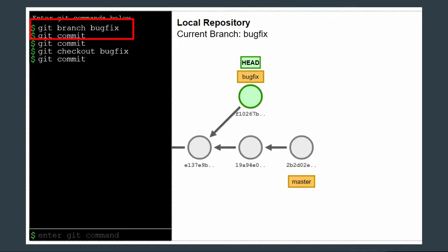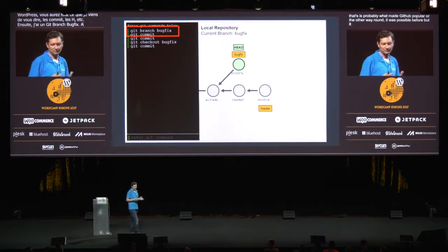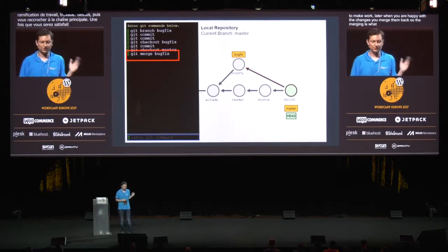Another powerful concept is branching and merging. This is probably what made Git popular — or the other way around, Git popularized this workflow. It was possible before, but it was quite hard. Git makes it really simple and mainstream. Whenever you are going to do some work, you should create a branch for the task. You can break things there, clean up later. It's your place to make work. And later when you're happy with the changes, you merge them back. So merging is what Git made really simple — it's just git merge.